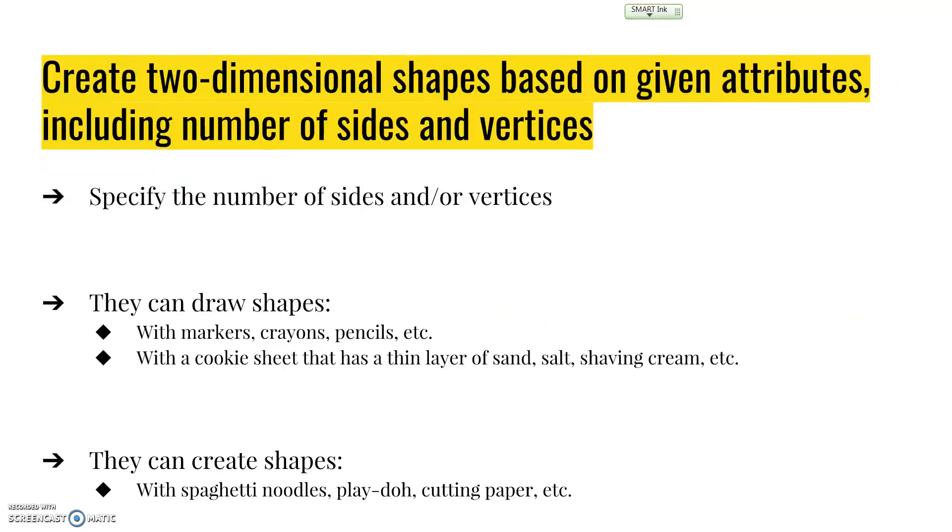They'll also create two-dimensional shapes based on given attributes, including number of sides and vertices. We might ask them to create a shape with five vertices and five sides. They might create a regular pentagon or something that looks very different. But as long as it has five vertices and five sides, they've created what we asked. Regardless of whether it looks traditional, it's a pentagon if it has five sides and five vertices.